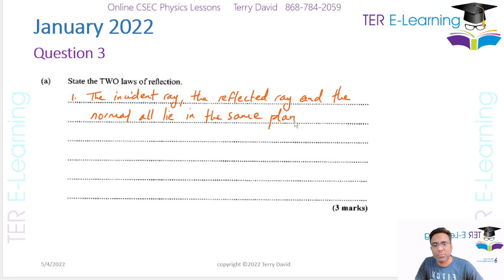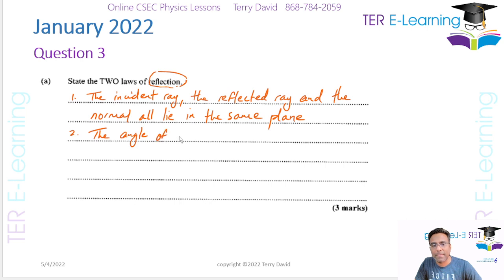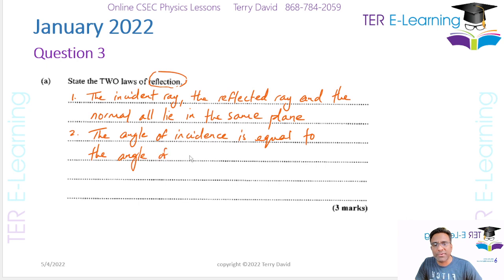So that is one of our laws of reflection. Don't mix this up with refraction — this is reflection. The second law is: the angle of incidence is equal to the angle of reflection.